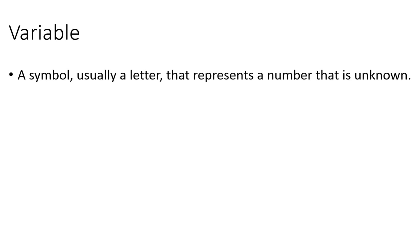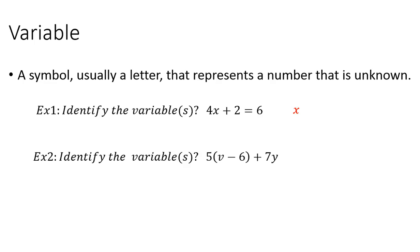A variable is a symbol, usually a letter, that represents a number that is unknown. For example, identify the variable or variables here. The variable would be x. Example 2, identify the variable or variables. The variables would be v and y.